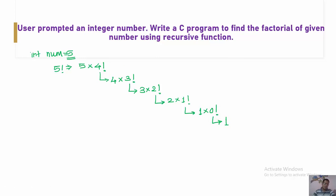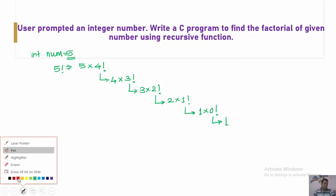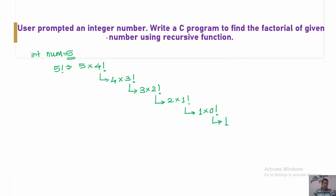From this, the general formula is clear. If we consider n, then the factorial is calculated as n multiplied by (n-1) factorial at every stage. And when n is equal to 0, the result is 1, so n factorial equals 1 when n is zero.